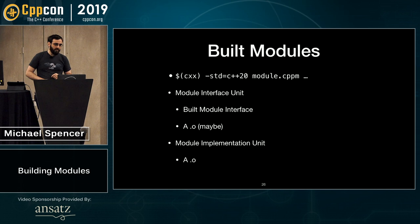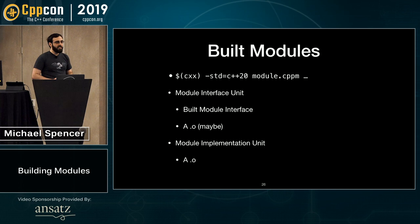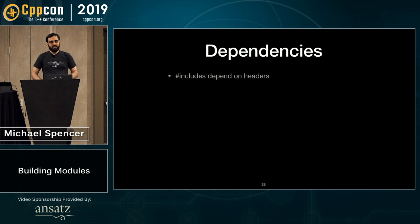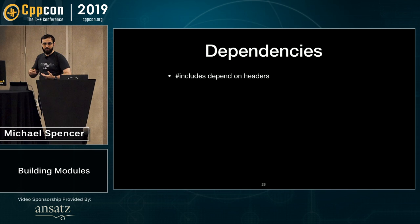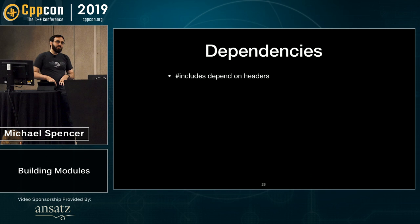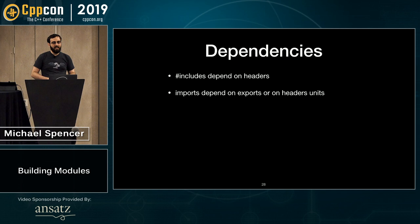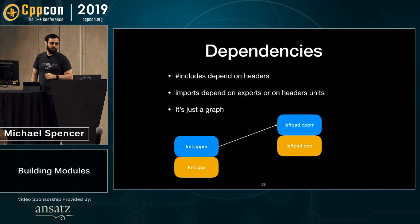For a module implementation unit, you're just going to get a .o. For build purposes, these are exactly the same as your normal translation units. Now there's the dependency problem. There are lots of dependencies in C++. Currently we have include dependencies — a file depends on the file it includes. This is really simple: the build system just needs to know if the file changed for invalidation. Imports depend on exports and on header units — slightly more complicated, but in the end it's really just a graph.